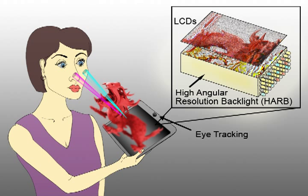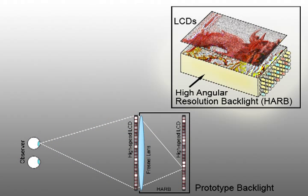A HAR backlight is capable of steering narrow, high-resolution light cones towards the eyes of the observer. We envision future implementations of high-angular resolution backlights to be thin devices, such as edge-lit light guides, as shown at top. For our prototype display, we constructed a HAR backlight using a single large Fresnel lens and a high-speed LCD display behind a front LCD.